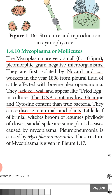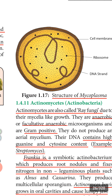The DNA of mycoplasma contains low guanine and cytosine content compared to true bacteria. They cause disease in animals and plants. Plant diseases include little leaf of brinjal, broom of legumes, phyllody of cloves, and sandal spike. Pleuropneumonia in cattle is caused by Mycoplasma mycoides. The structure lacks a cell wall — the outermost layer is the cell membrane, inside which a DNA strand and few ribosomes are present.